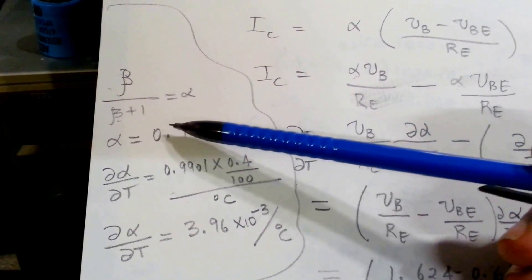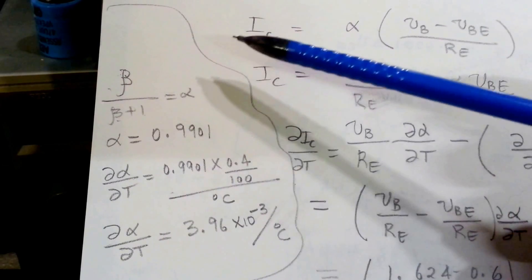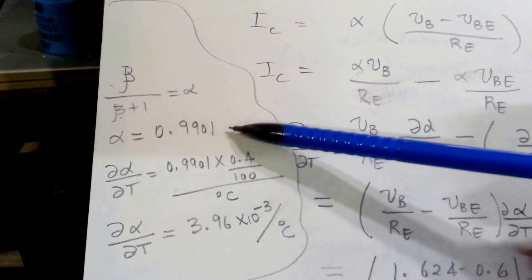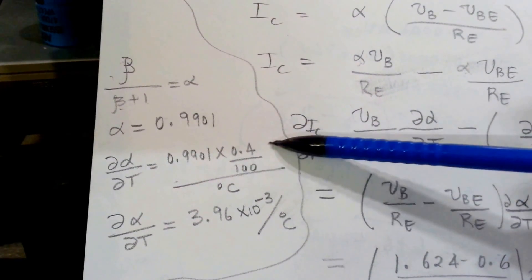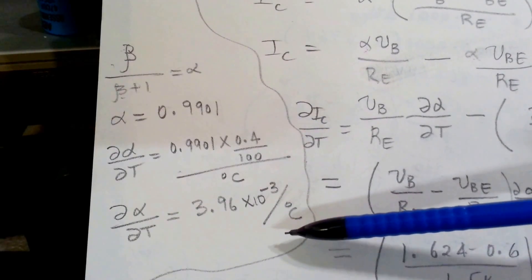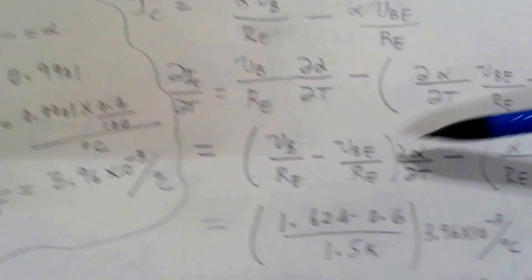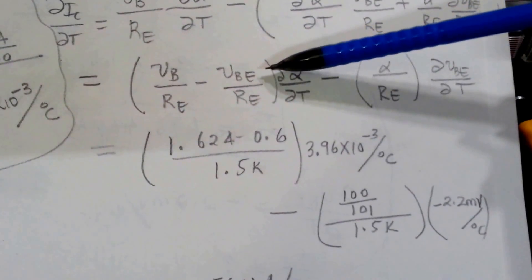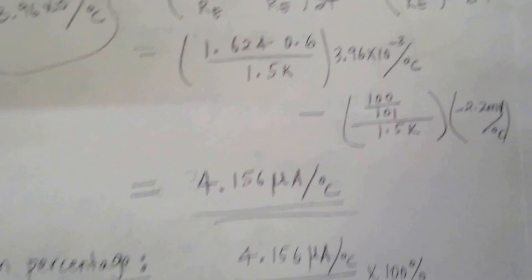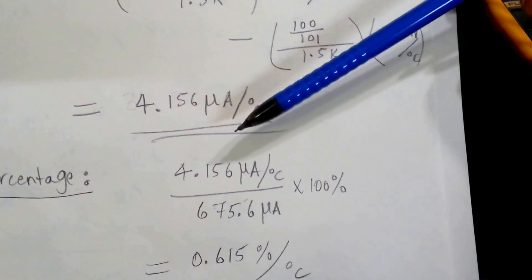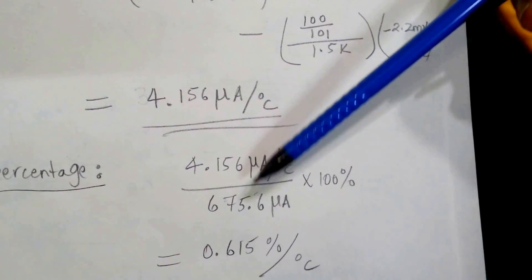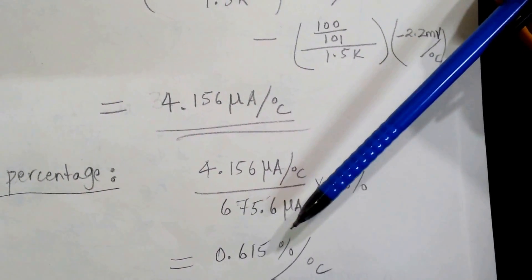Which is basically alpha equals beta divided by beta plus 1. And alpha in this case, since beta is 100, is 0.9901. And if we take the percentage of 0.4 per degree C effect on it, delta alpha by delta T, we get 3.96 times 10 to the power minus 3 per degree C. So now if we put those values into this expression, we get 4.156 microamps per degree C. And if we want to get the percentage of now the combined effects of HFE and VBE with respect to temperature, with the nominal current, we get 0.615 percent per degree C.